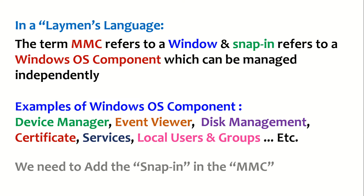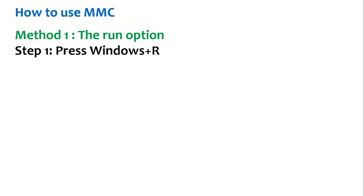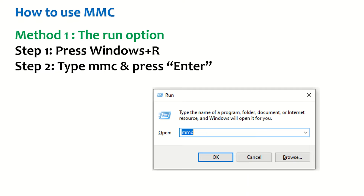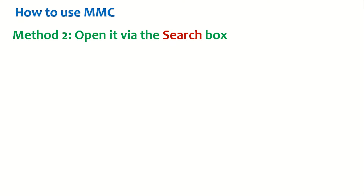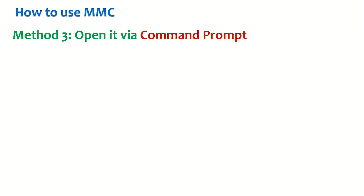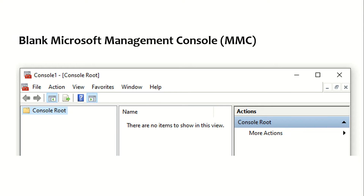So how do we use Microsoft Management Console? Method number one is the Run option — simply press Windows+R to get the Run dialog, type in MMC, and press Enter to get the Microsoft Management Console. Method number two, you can simply search for MMC and just hit Enter, and a blank Microsoft Management Console window will open up. The third option is to open up the command prompt, type in MMC, and hit Enter to get the console.